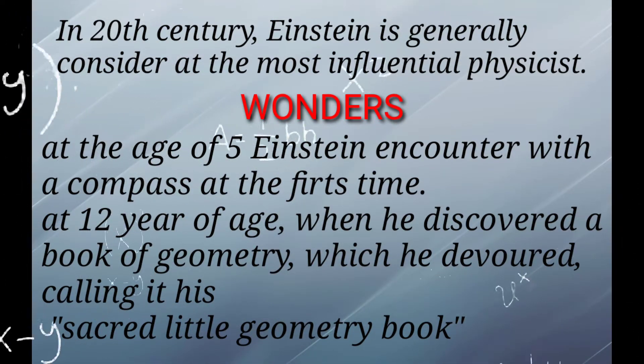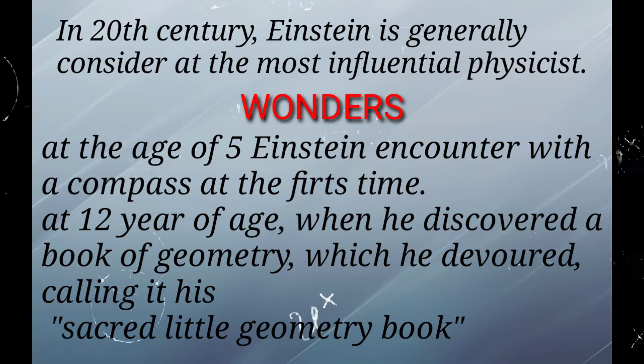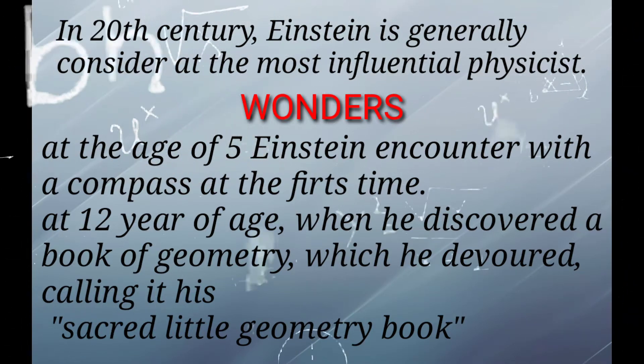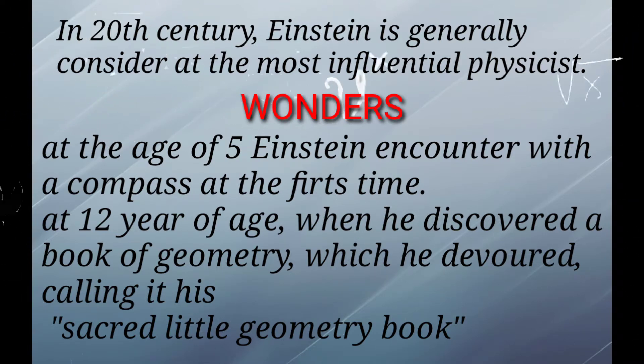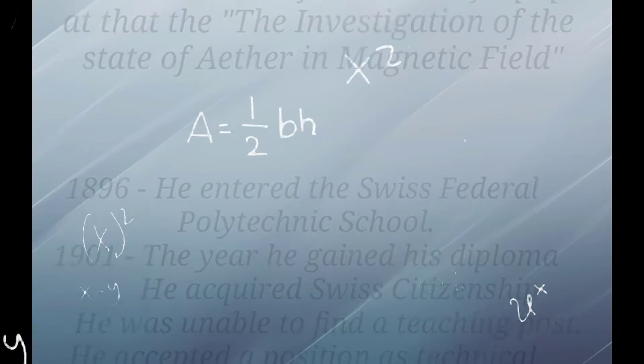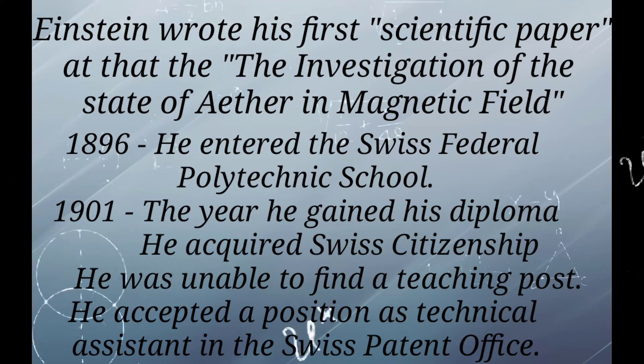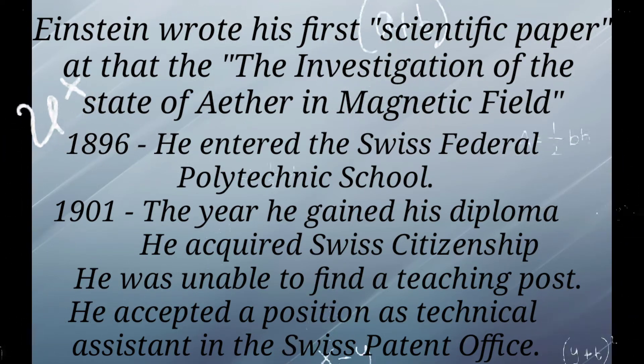The wonders of Albert Einstein's life. In the 20th century, Einstein is generally considered the most influential physicist. At the age of five, Einstein encountered a compass. At the age of 12, he discovered a book of geometry which he devoured, calling it his sacred little geometry book. Einstein wrote his first scientific paper at that time.